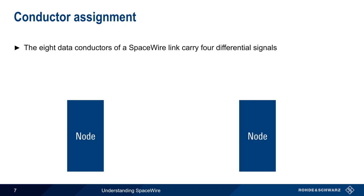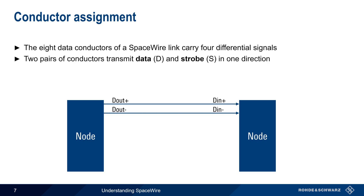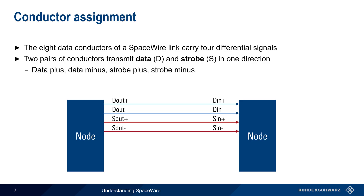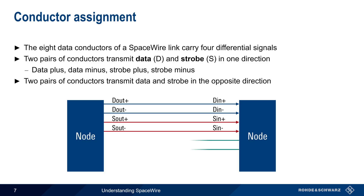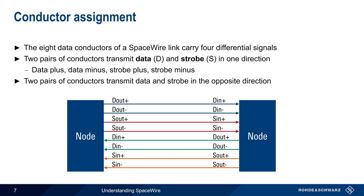The eight signal-carrying conductors of a SpaceWire link are used to carry four differential signals. One differential pair carries so-called data signals in one direction, and another differential pair transmits so-called strobe signals in the same direction. The individual wires are sometimes called data plus, data minus, strobe plus, and strobe minus. The other two pairs are used to transmit data and strobe in the opposite direction. Remember that all SpaceWire links are bidirectional — signals can flow simultaneously in both directions between the nodes.